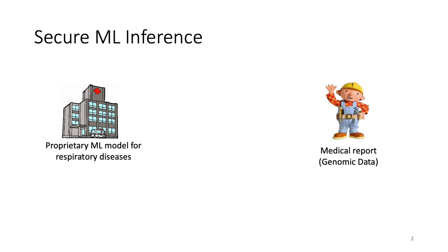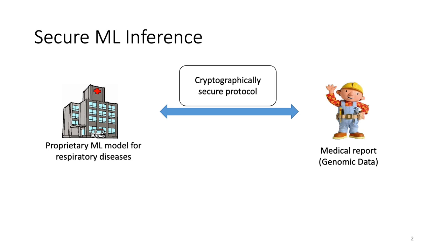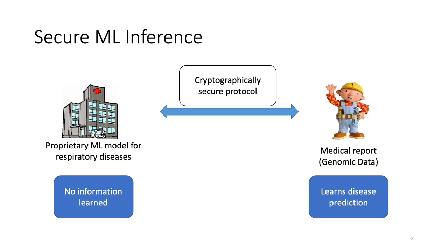The problem we are trying to solve is that of Secure Machine Learning Inference. Consider a hospital that has a proprietary machine learning model for respiratory diseases, and a user who has medical data and wants to use that model for inference. There is a privacy tension: the hospital doesn't want to reveal its proprietary model, and the user doesn't want to share private medical data. Cryptography resolves this tension through a secure protocol at the end of which the user learns the disease prediction and neither party learns anything about the other's data. This cryptographic primitive is referred to as Secure Multiparty Computation, or MPC.